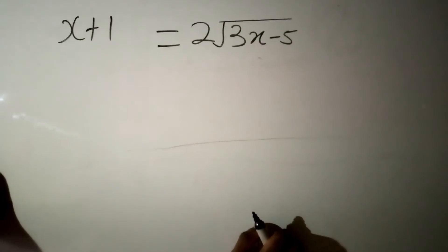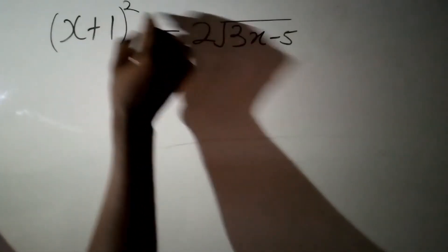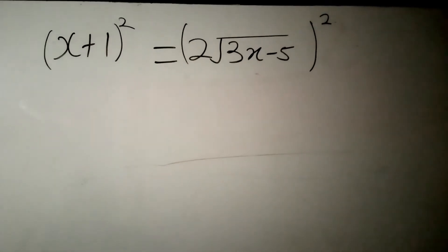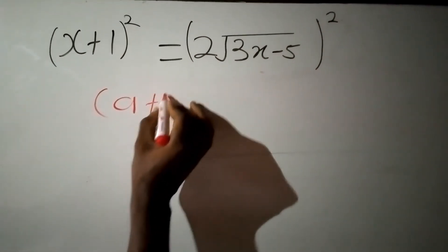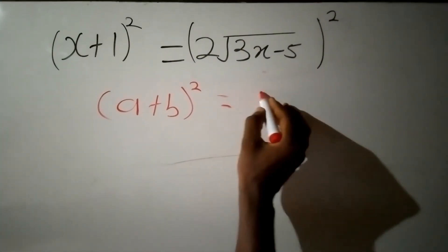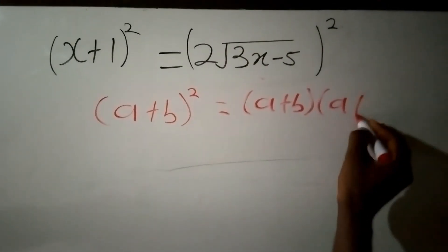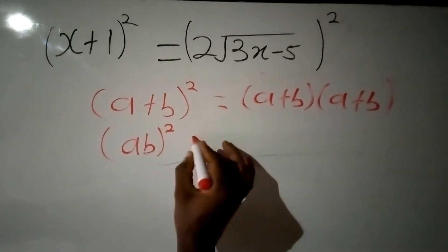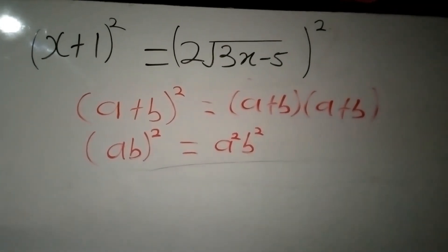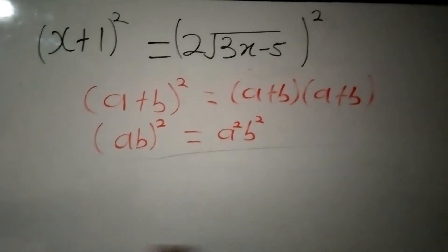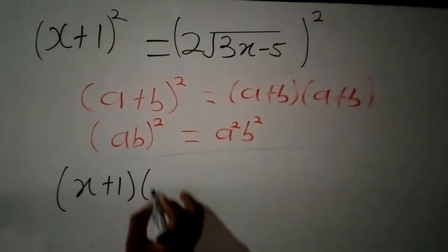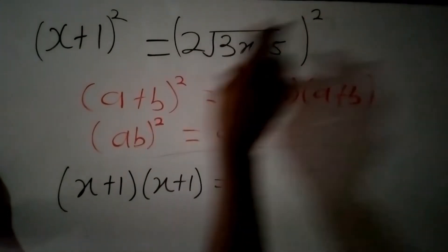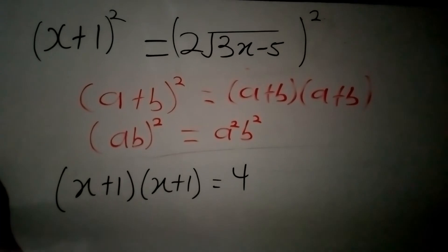We still have our square root, so we have to introduce our square again. We square the left hand side as well as the right hand side. From the right hand side, squaring 2 root of 3x minus 5: I get x plus 1 multiplied by x plus 1 on the left. This is a single term on the right, so I square them individually — 2 squared gives me 4, and the square takes care of the square root sign.